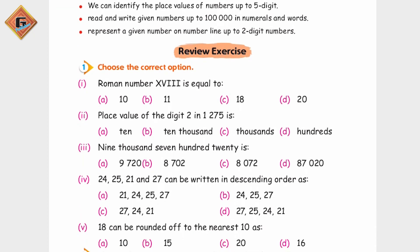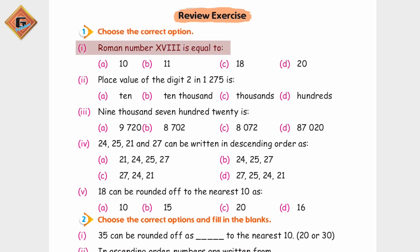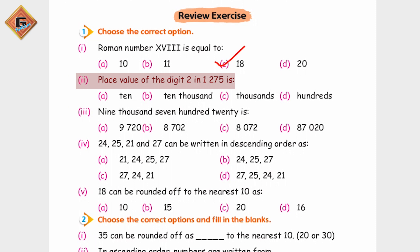Ab chalte hain review exercise ki taraf. Review exercise mein 'choose the correct option': Roman numbers - yeh Roman number kiske equal hai? Options hain 10, 15, 16, 17, and 18. Next: the place value of the digit 2 in 1275 is - unit, 10, or 100? Yahan par yeh 100 hogi.